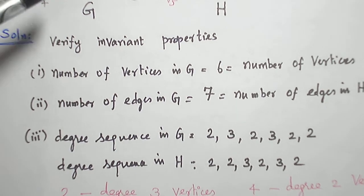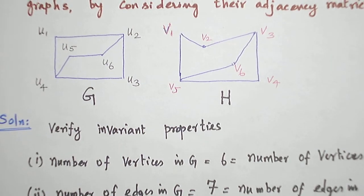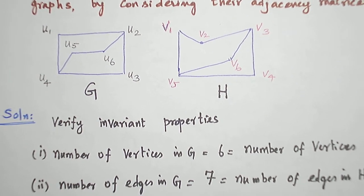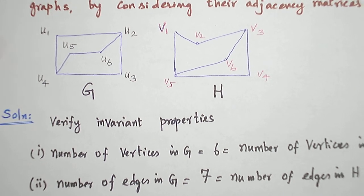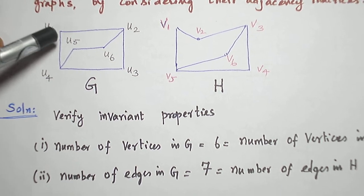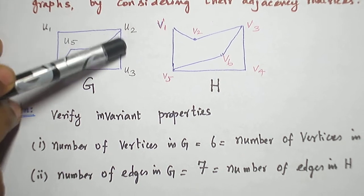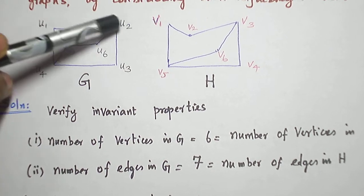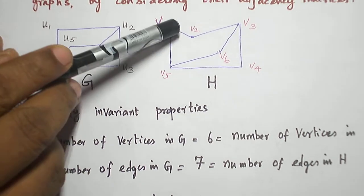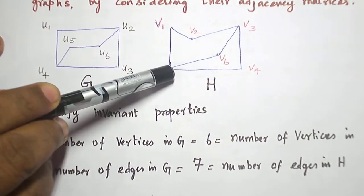For circuits, there are no circuits of length three in both graphs. And for circuits of length four, there is only one circuit. u1 to u2, u2 to u3, u3 to u4, u4 to u1. This is the circuit of length four in G. And this is the circuit of length four in H.